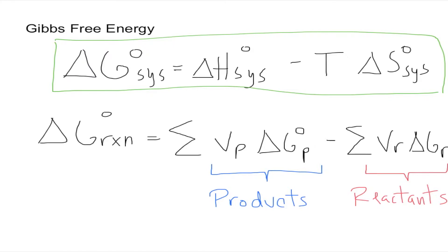The formula for that is the following: Delta G for the reaction is going to be the sum of the number of moles times the change in Gibbs free energy for the products